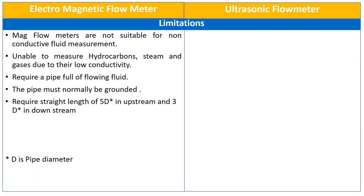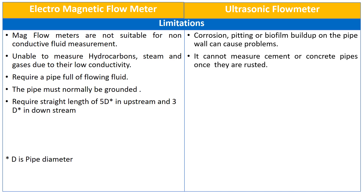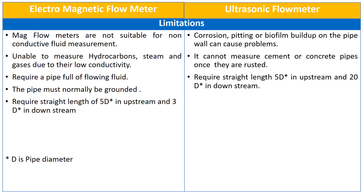Now let's see the limitations of ultrasonic flow meters. Corrosion, pitting, or biofilm buildup on the pipe can cause problems. They cannot measure cement or concrete pipes once they are rusted. The ultrasonic flow meters require a straight length of 5D in upstream and 20D in downstream. The ultrasonic flow meters are more expensive as compared to electromagnetic flow meters.